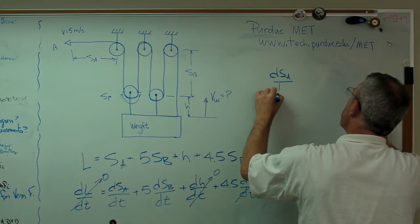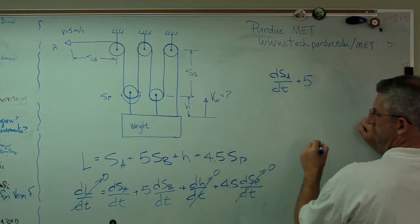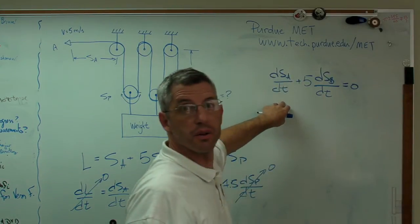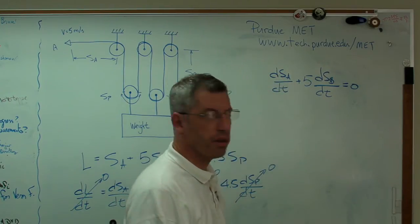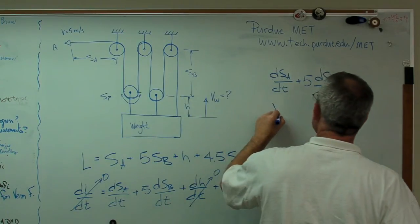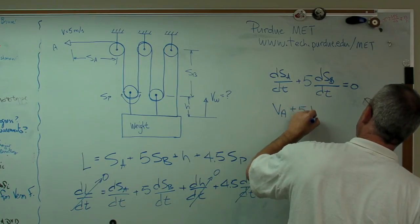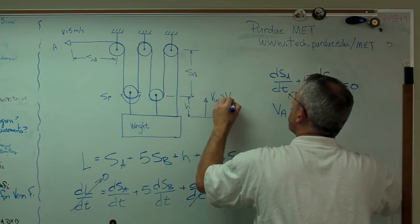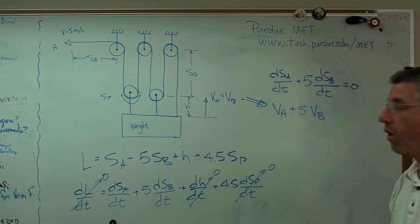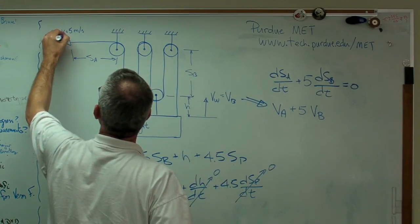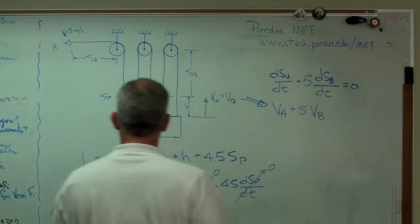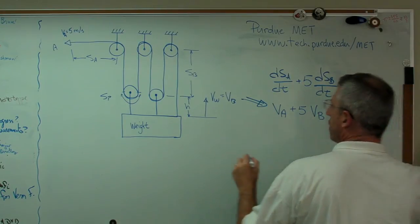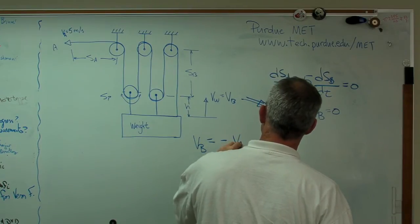Now we're getting somewhere. We can say dSA/dt plus 5 dSB/dt equals zero. The change in length with respect to time is a velocity, so this becomes VA plus 5 VB equals zero. If I know VA, I can figure out VB. Solving for VB: VB equals minus VA over 5.